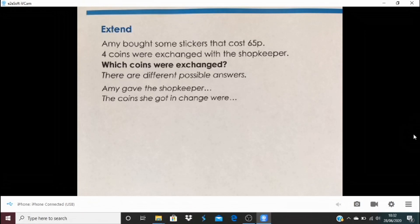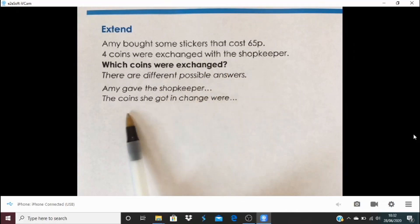So we start today with this extend task from yesterday. Amy bought some stickers that cost 65p. Four coins were exchanged with a shopkeeper. Which coins were exchanged? Now there are different possible answers. So what could Amy have given the shopkeeper and which coins could she have got in change?